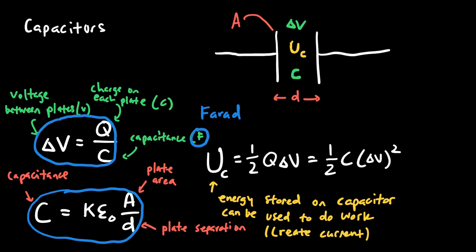Plate separation has an inverse relationship with capacitance — the farther apart the plates, the lower the capacitance. The formula includes ε₀ as a constant, and K as the dielectric constant representing the material between the plates. A dielectric is sometimes placed between the plates to allow greater capacitance. Without a dielectric, as charge increases the electric field between the plates can break down, causing a spark. A dielectric makes this breakdown harder, allowing more charge to be stored.